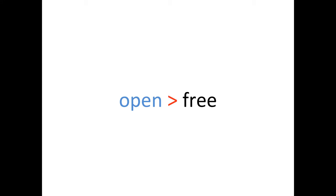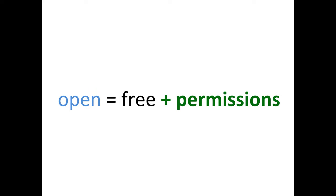You're starting to get the idea: open is not the same as free. Most of what we find on the internet is freely available, but it's also all rights reserved copyright, where we may not have permissions to do some of the things that we need to do with those resources in our learning environments. So in the open education space, we say that open is different than free, and open is better than free. Open is free plus permissions.